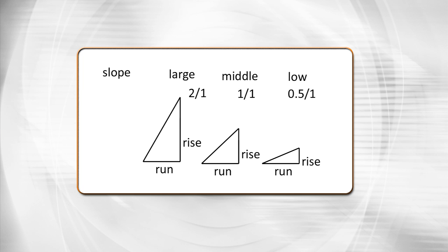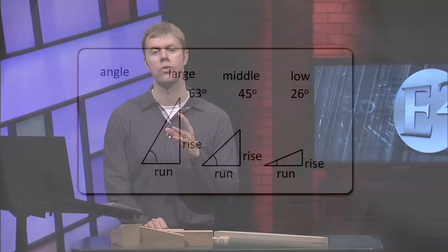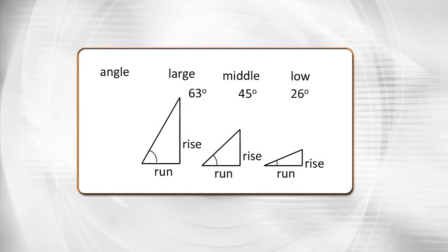Rise goes in the top of the fraction — that's called the numerator. The run goes in the bottom — that's the denominator. I'm showing some triangles with different angles or different slopes: a large slope of two to one, a middle slope of one to one, and a low slope of 0.5 to one. You could simplify these fractions to two, one, and 0.5. You would use units like feet, inches, or meters. Instead of talking about slopes, you could also talk about angles — slopes and angles are the same thing. Slope is just a way to put it in math and fractions that are a little easier to deal with and measure if you're actually building something.